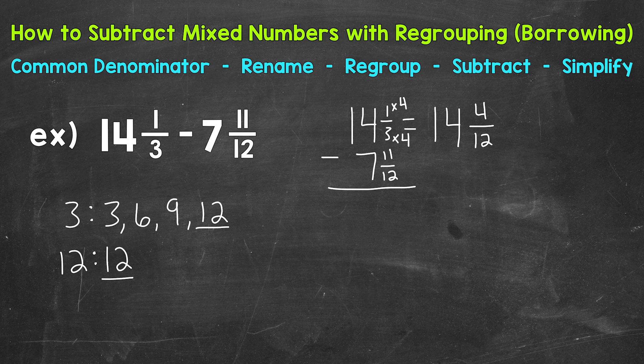So now we can do 7 and 11/12. Well, that already has a denominator of 12. So we do not need to rename there. We can just bring over the 11/12. Let's bring over our subtraction sign and then the equal sign.